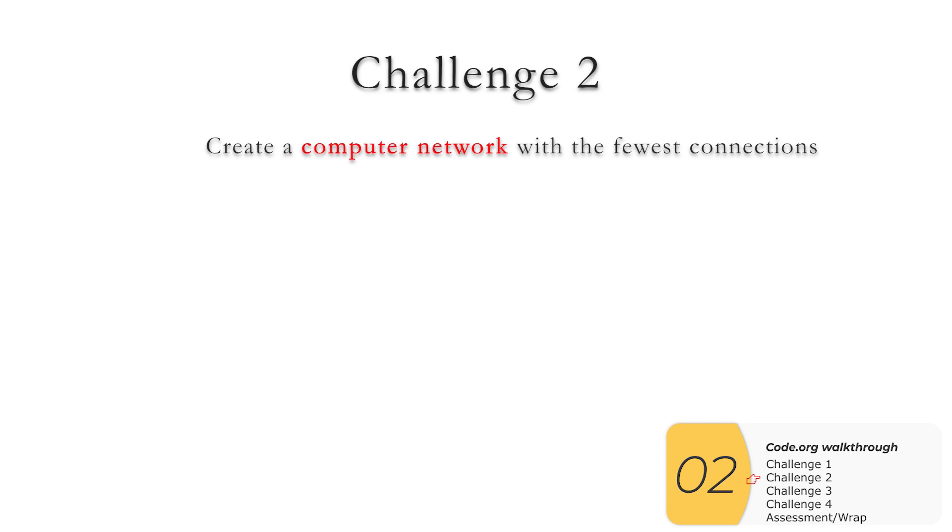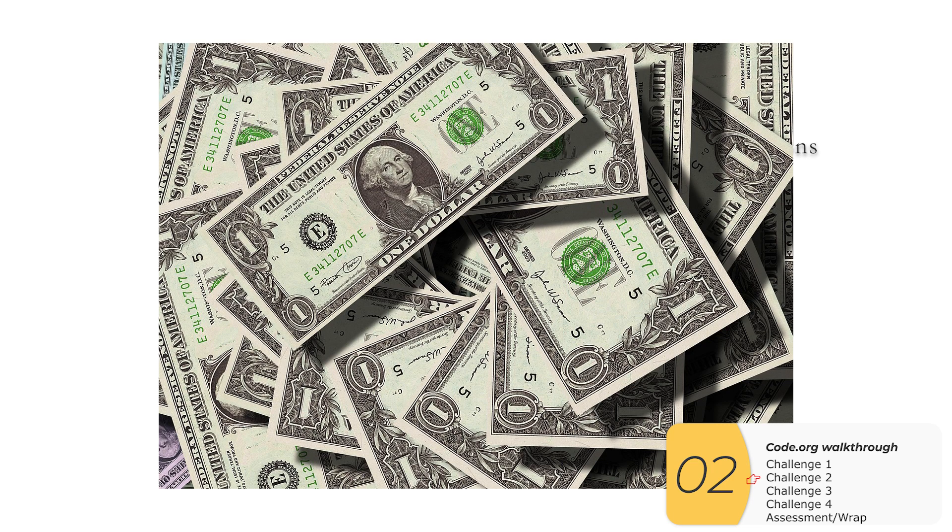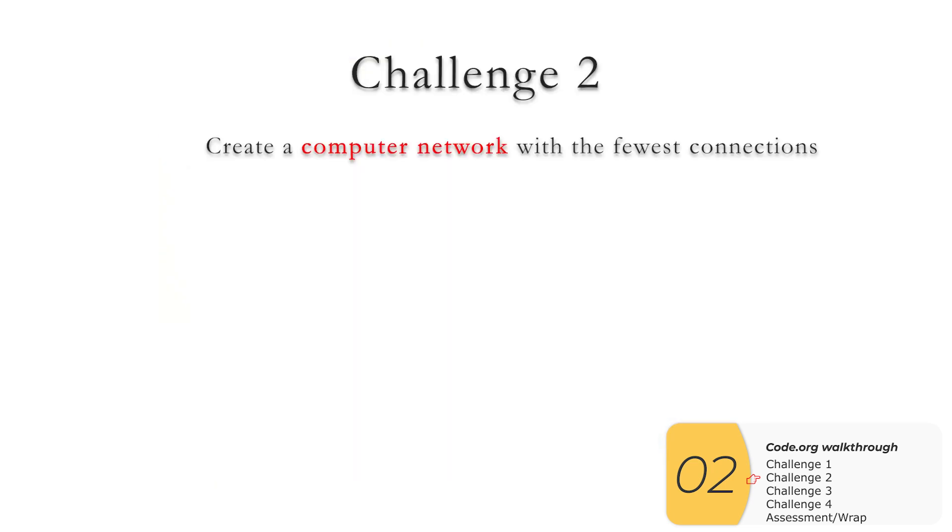And now we move to challenge 2, which is to create a computer network with the fewest connections. And why do we care? Because these connections cost money. Remember, each connection is representing an Ethernet cable. So if I do this for 5 computing devices, you'll see I need not 5 connections, but 4 connections. I don't actually need that last one. 5 can reach 1 by going through 4, 3, and 2. So the path it takes is 5, 4, 3, 2, 1.